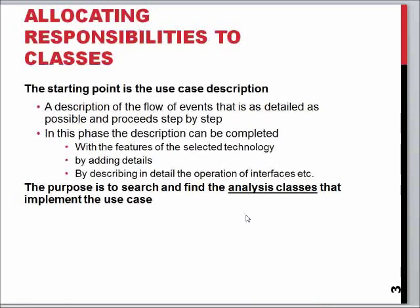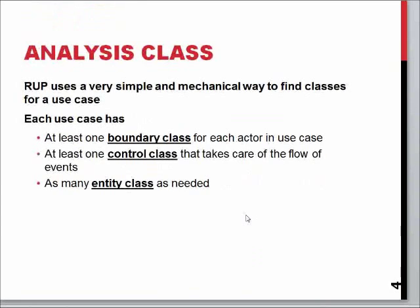We start to add real functionalities and go from analysis classes towards the classes, objects, and modules we actually have to create. This analysis is straightforward: for each mechanical system, interface, or user group we need one interface; for each interface we need something that does the heavy lifting of work; and we also need data storage for all the information we need to store. So BCE — Boundary, Control, and Entity — is the answer to this problem.